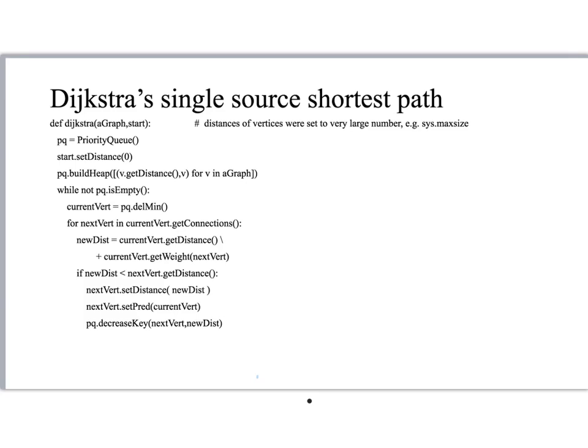This screencast is a brief review of Dijkstra's single source shortest path algorithm. The idea of this algorithm is to, given a source vertex, a start vertex, find the shortest path from that vertex to all the other vertices in the connected component of the graph that the start vertex is in.